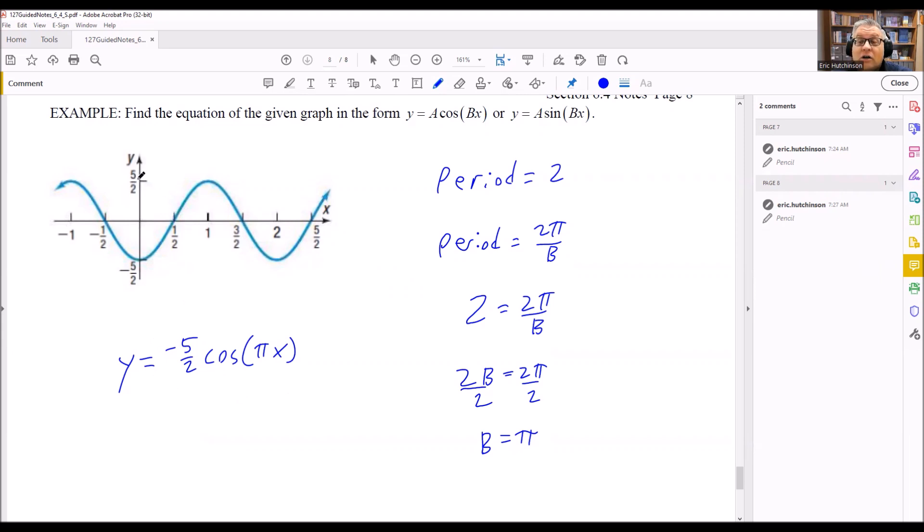Now, if the graph started up here at positive 5/2, then this would be positive 5/2 right there. Again, because it doesn't go to the origin, that's why we know it's a cosine graph. It's only a sine graph if it goes through the origin.